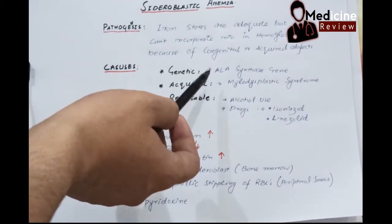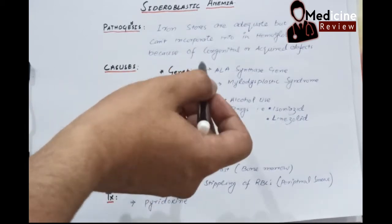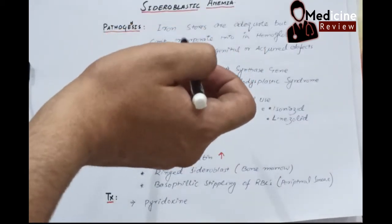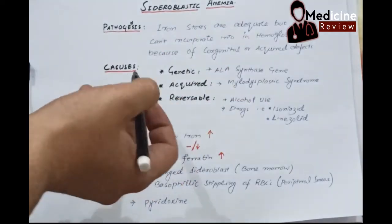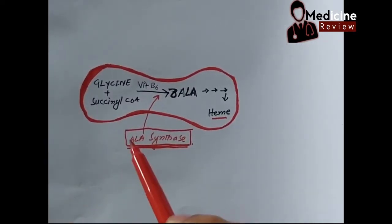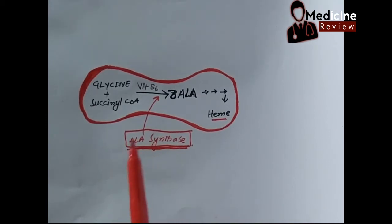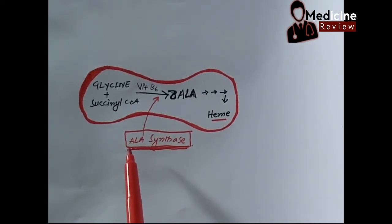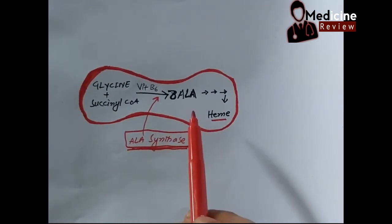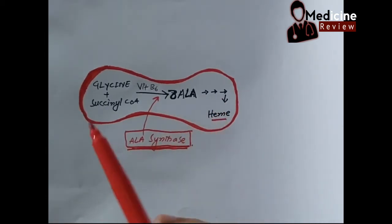Before going into the topic properly, let me explain the role of amino levulinic acid synthase. This is an RBC, and these are a few steps of heme synthesis. We will not discuss all steps of heme synthesis because it is a proper topic of biochemistry. We will just look at the role of ALA synthase in heme synthesis.